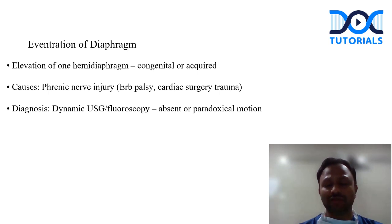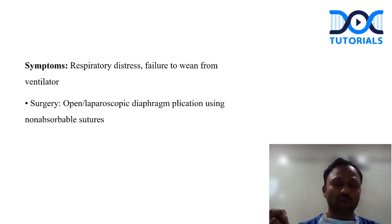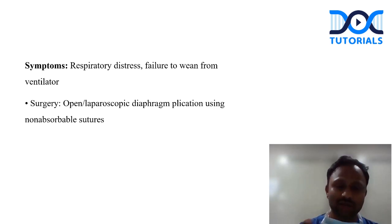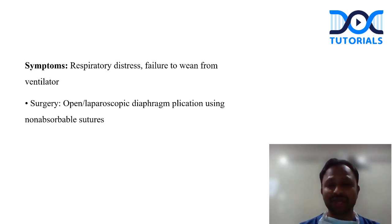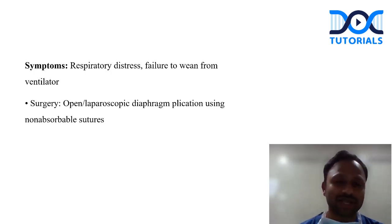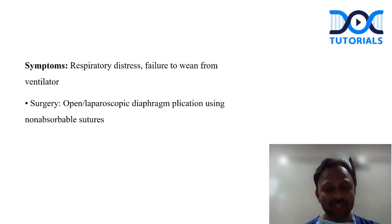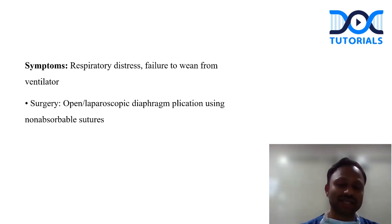To diagnose eventration: start with X-ray, maintain a high index of suspicion, then perform dynamic ultrasound and fluoroscopy — you will see absent or paradoxical motion of the diaphragm. For repair, there are two options: plication (open or thoracoscopic using non-absorbable sutures) or excisional tapering, where the thinned diaphragm is excised and tapered to achieve a taut diaphragm, eliminating paradoxical motion. Indications for surgery include failure to wean from ventilator, recurrent respiratory distress, and recurrent pneumonia.